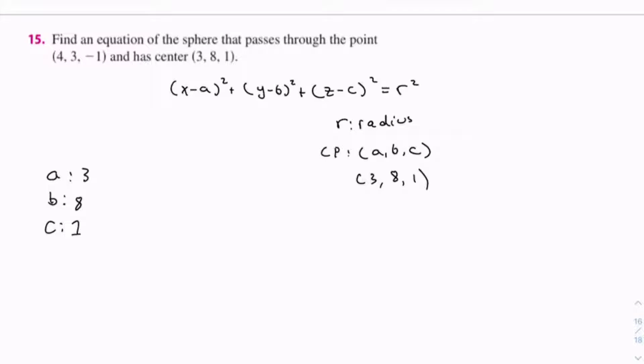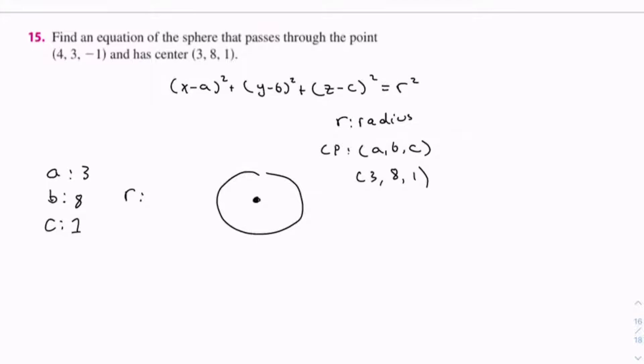With that center point, we need to find the radius. We have the center point and a point on the edge of the sphere. If we find the distance between these two points, we will get the radius.